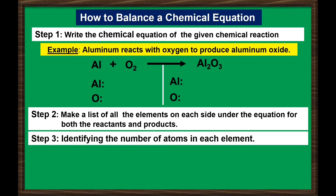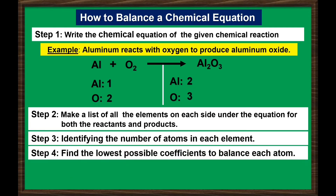The third step is to identify or determine the number of atoms of each element. In our example, for the reactants, the number of aluminum is 1 and the number of oxygen is 2. For the products, the number of aluminum is 2 and the number of oxygen is 3. Clearly, the number of atoms in reactants is not equal to the number of atoms in products. To balance the equation, for the fourth step, we need to find the lowest possible coefficients to balance each atom. For aluminum in reactants, we can multiply by 4 to have 4 aluminum. For oxygen, we can multiply by the coefficient 3 to have 6 atoms of oxygen. For aluminum in products, we can multiply by coefficient 2 to have 4 atoms of aluminum. For oxygen, we can multiply by coefficient 2 to have 6 atoms of oxygen. Notice that the number of atoms in reactants is now equal to the number of atoms in products.